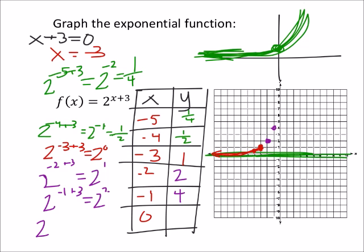And then finally, two to the power of zero plus three, plus three, the same as two to the power of three, which is eight. And then we'd have this point.